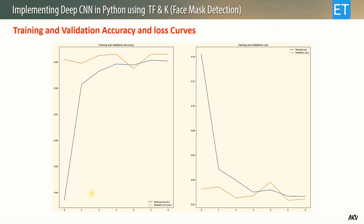Here are two plots showing training and validation accuracy as well as loss. The accuracy curve shows training accuracy (blue) starting from 94% and reaching toward 99%, while validation accuracy (red) reaches a straight line at 99.3% after seven epochs. The loss curve shows training loss (blue) and validation loss, both decreasing appropriately.